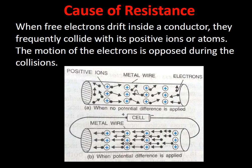What causes resistance? When no potential difference (battery) is applied, electrons in the conductor move randomly. When a potential difference is applied, electrons move from negative to positive, while conventional current flows from positive to negative. As free electrons drift inside the conductor, they frequently collide with each other and with positive ions. The motion of electrons is opposed during these collisions — this is the origin of resistance.